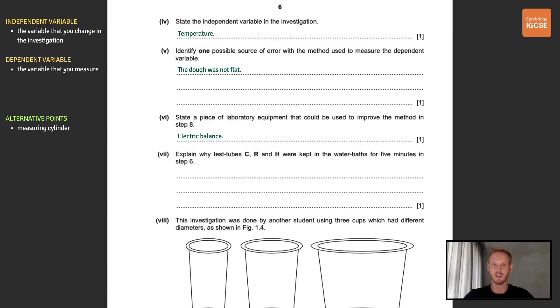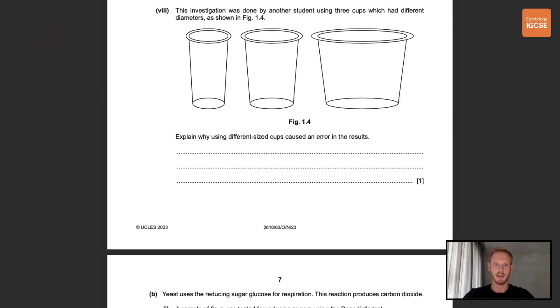Next, explain why test tubes C, R and H were kept in the water baths for five minutes in step six. This is simply to allow the temperature of the water in the test tubes to become the same as the temperature of the water baths, or in other words, to equilibrate the water. Now don't worry about your wording too much for questions like these, as long as the point you're trying to get across is clear.